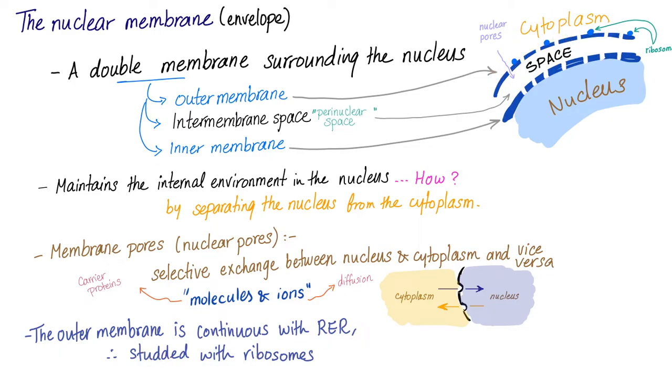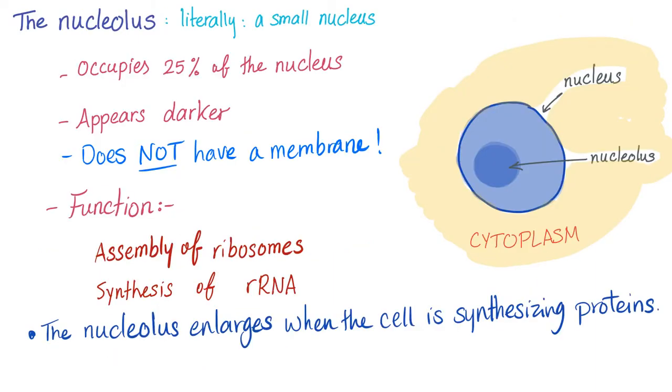So it has lots of ribosomes on it. The nucleolus, which is today's topic, occupies a quarter of the nucleus. It appears darker in color and doesn't have a membrane. What are the functions? Assembly of ribosomes and synthesis of rRNA. R stands for ribosomal RNA.